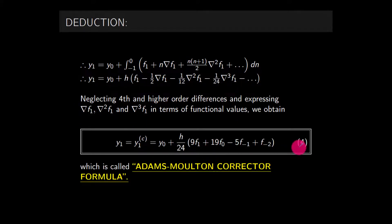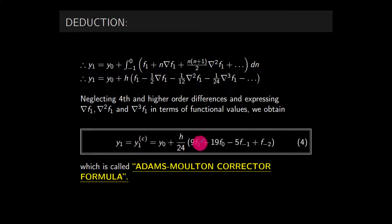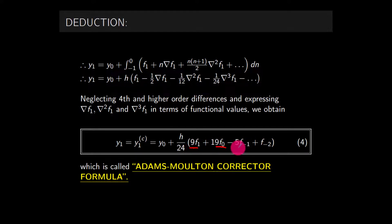Substituting all values, we obtain equation (4), also known as Adams-Moulton corrector formula: y₁ᶜ = y₀ + h/24 [9f₁ + 19f₀ - 5f₋₁ + f₋₂]. Here f₁ comes first, then f₀, f₋₁, and f₋₂. So this is your corrector formula.